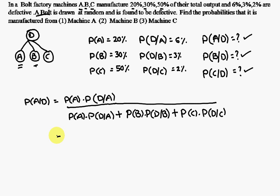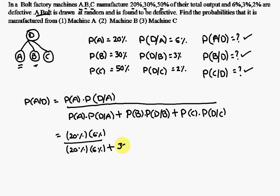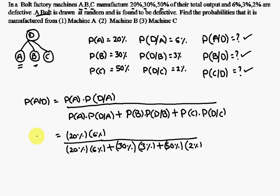Substituting the values: probability of A is 20%, probability of D given A is 6%, so the numerator is 20% into 6%. The denominator is 20% into 6%, plus probability of B which is 30% into probability of D given B which is 3%, plus probability of C which is 50% into probability of D given C which is 2%.